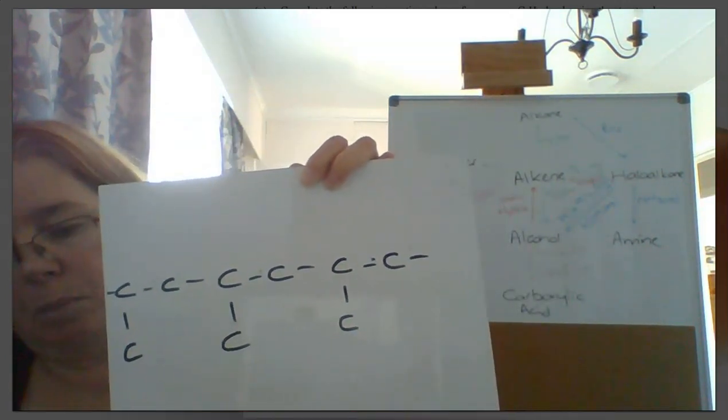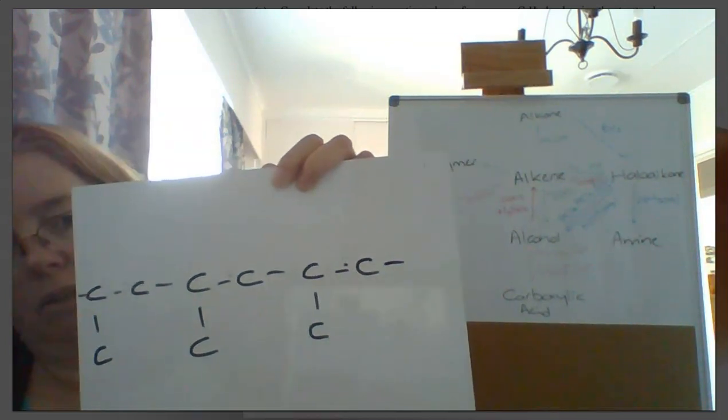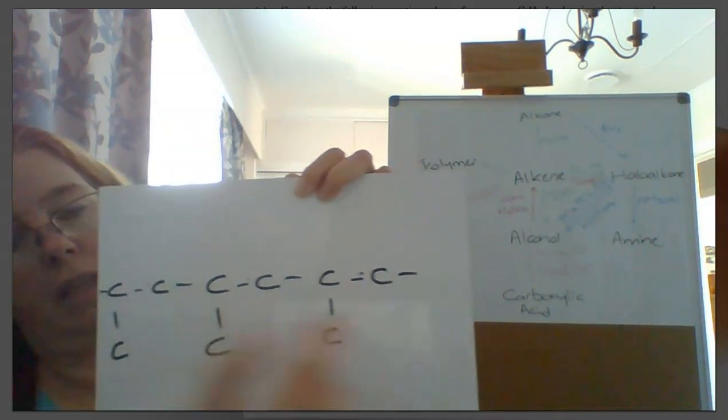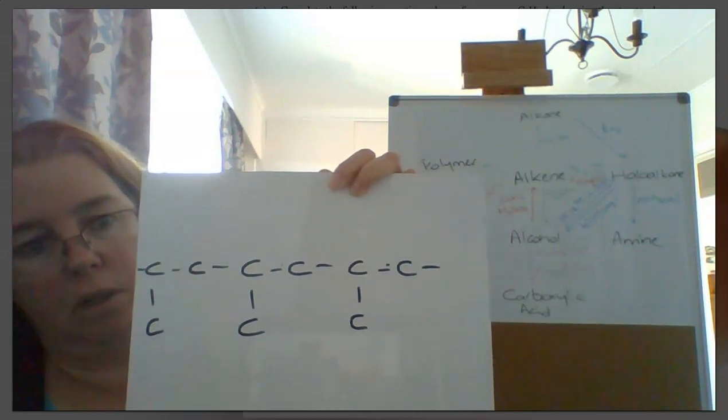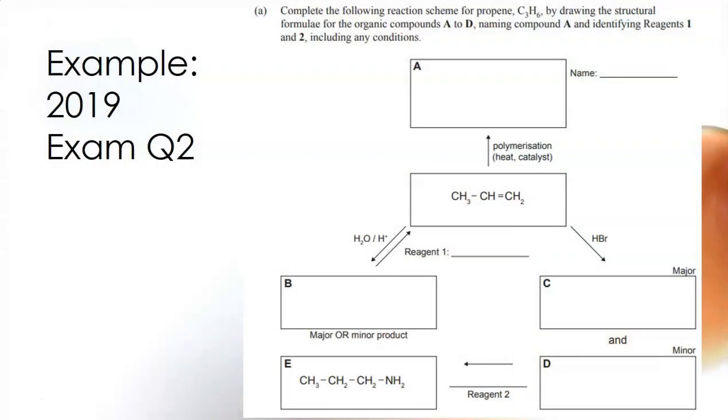There, polypropene. Obviously you've got hydrogens on here as well, you can't just leave it like that but leave the end dashes open. That's really important. Okay so we've started off, first step we've found compound A, it is polypropene.